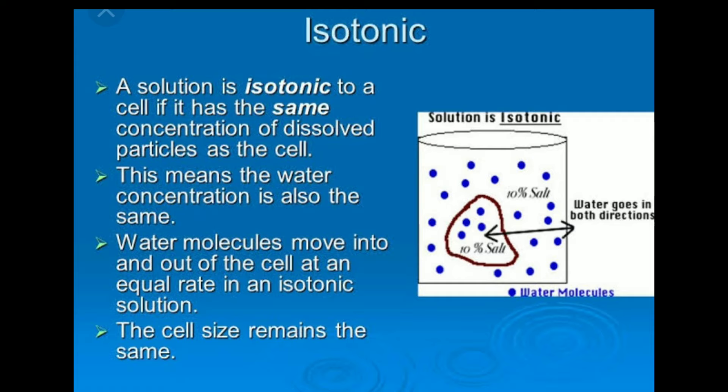An isotonic solution has the same concentration of dissolved particles as the cell. This means water concentration is also the same, and water molecules move into and out of the cell at an equal rate, so the cell size remains the same. For example, if inside the cell and outside both have 10% salt concentration, water goes in both directions equally.